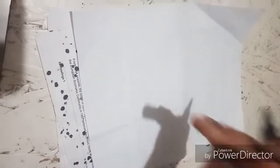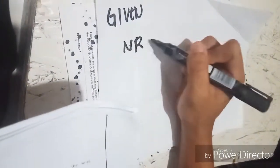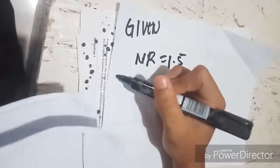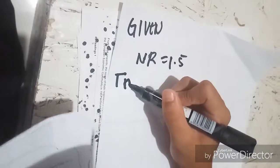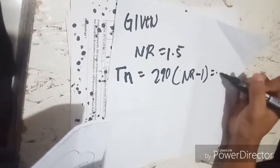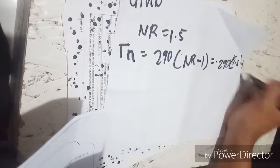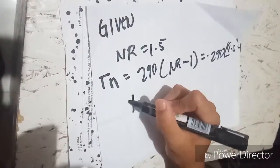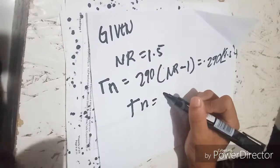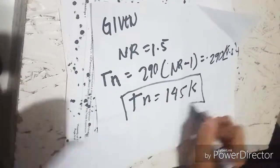We have a problem here: if the noise ratio of a circuit is 1.5, what is the noise temperature? Given NR is equal to 1.5, the solution is TN equals 290 times (NR minus 1), which equals 290 times (1.5 minus 1). The answer is TN equals 145 Kelvin. This is the answer for problem number six.